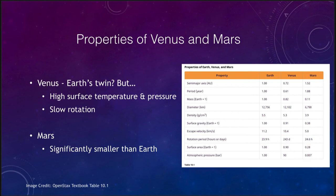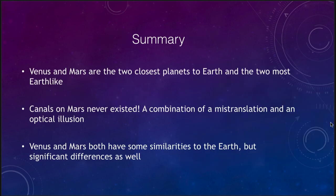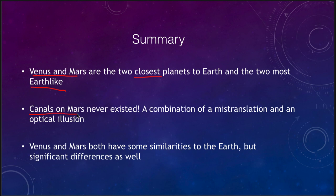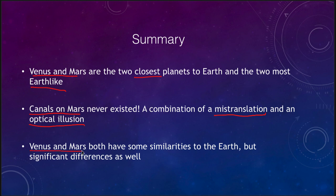To summarize: Venus and Mars are the two closest planets to the Earth and the most Earth-like, having the biggest similarities of any planets to the Earth. Neither of them is exactly like the Earth, but they have the closest similarities. Canals on Mars never existed — it was a combination of mistranslation of the word canali from the original observer, and essentially an optical illusion. Recall that observations were done by drawing, looking with your eye rather than making photographs. The technology of photography was just coming up at that time, and the mind tends to put reason and pattern to things that are essentially randomness. Venus and Mars both have some similarities to the Earth, but do have very significant differences as well.